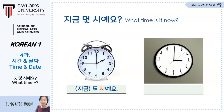두 시예요. Then how about 3 o'clock? Number 3 is 하나, 둘, 셋. But again, we move the ending consonant — it becomes 세. 3 o'clock is 세 시예요.